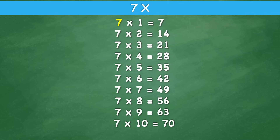7 times 1 equals 7. 7 times 2 equals 14. 7 times 3 equals 21. 7 times 4 equals 28. 7 times 5 equals 35. 7 times 6 equals 42. 7 times 7 equals 49.